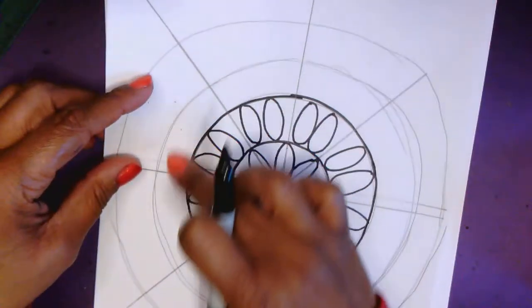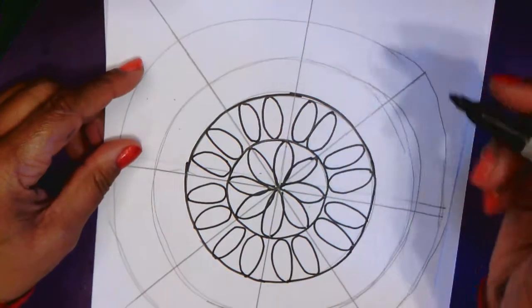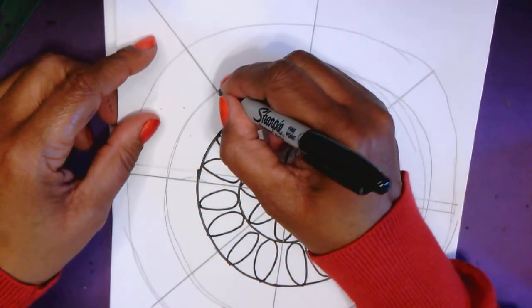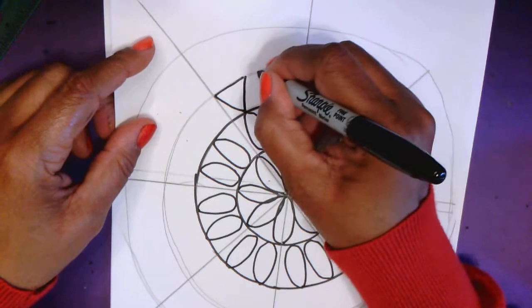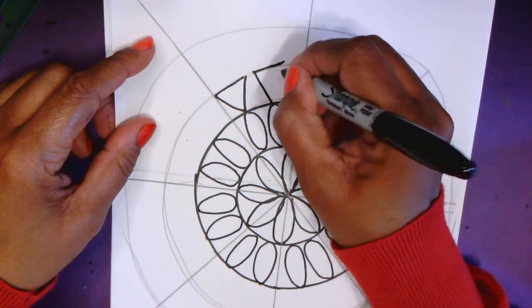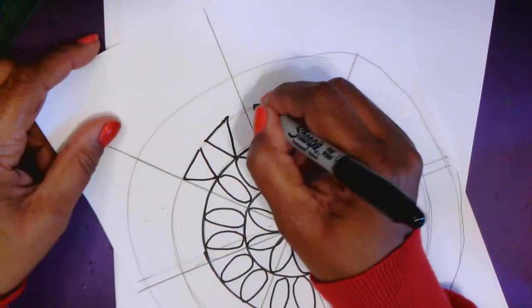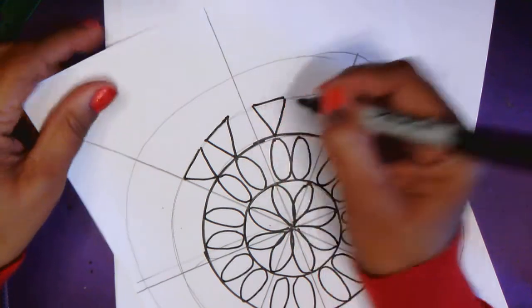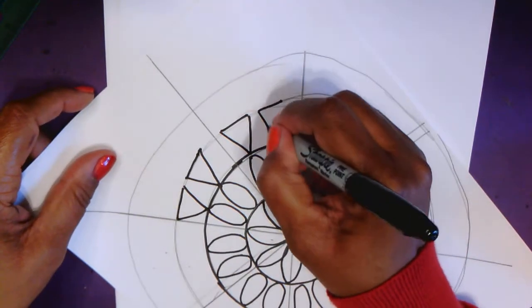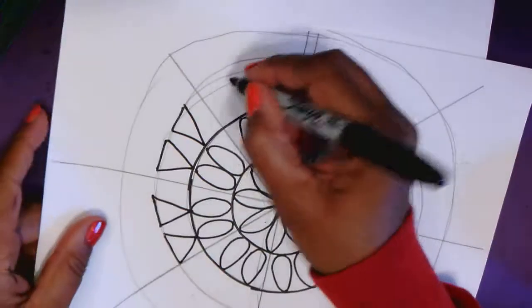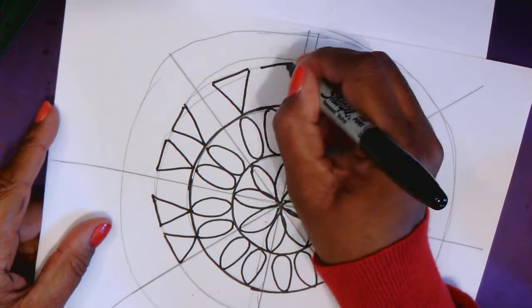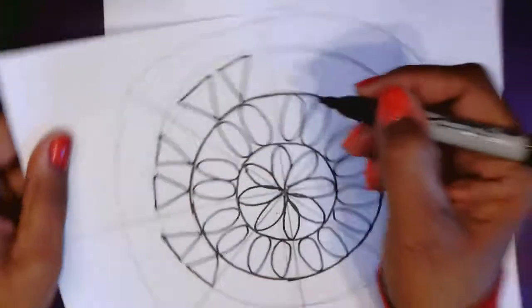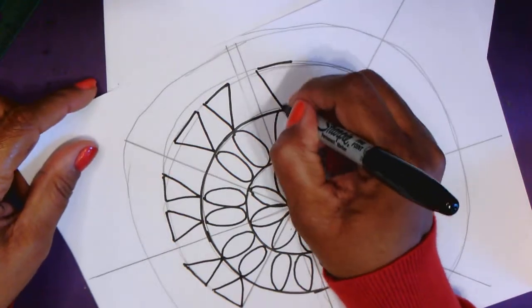Alright, so my next circle, I think I'm going to try something different. I think I'm going to try triangles. So I'm going to have the point of my triangle touch those ovals. So I'm going to go around.